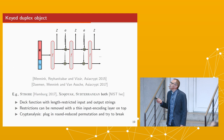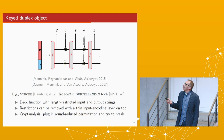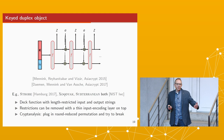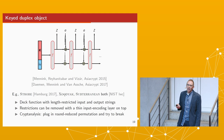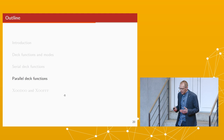The sponge is nice, but the problem is that it is inherently serial. You cannot compute a later permutation call before completing the earlier one, because each output is only available after the previous permutation call. So we started looking into ways of doing things more in parallel.